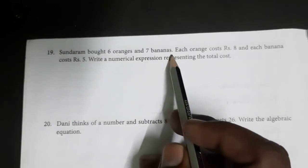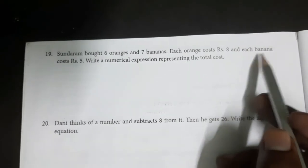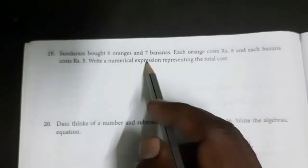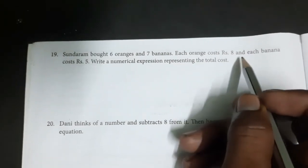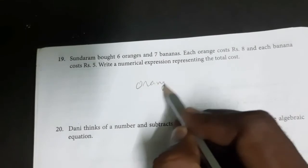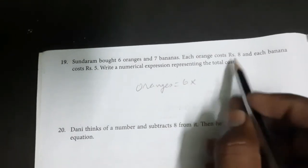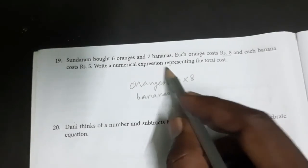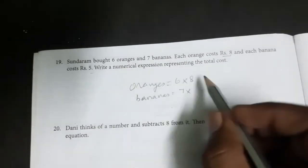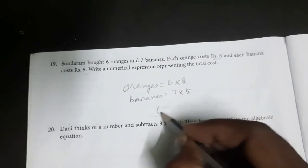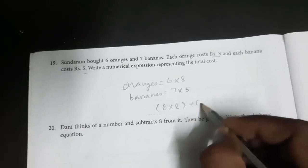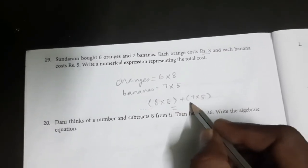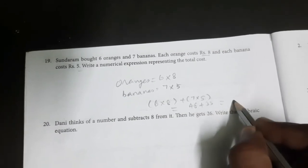Question 19: Sundaram bought 6 oranges and 7 bananas. Each orange costs Rs. 8 and each banana costs Rs. 5. Write a numerical expression for the total cost. 6 oranges at Rs. 8 each: 6×8. 7 bananas at Rs. 5 each: 7×5. Total = 6×8 + 7×5 = 48 + 35 = 83 rupees.